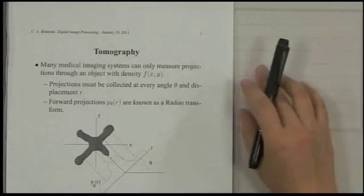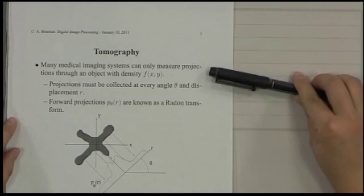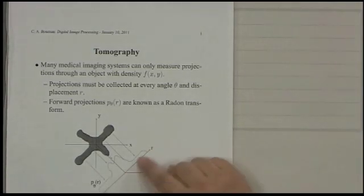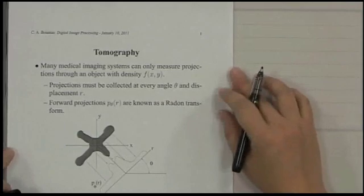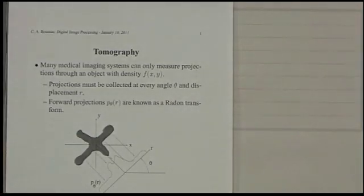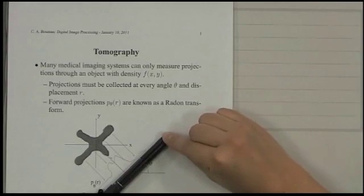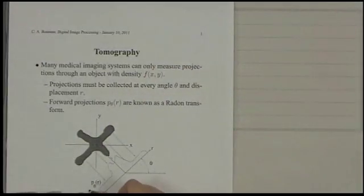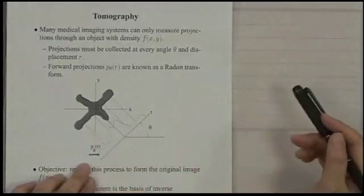Let's refresh the memory about the CT projections. First of all, many medical imaging systems can only measure the projections through an object with density f(x,y). And then we are looking at this line angle theta, and this is the object. Here, this looks like uniform, but it doesn't have to be uniform. The density can be varying values. And then onto a line with angle theta, we take a projection in this direction. And then we get this p_theta(r). So this is the projection, this is the measurement we get through CT.